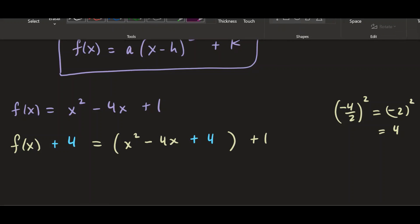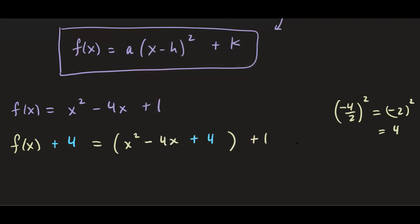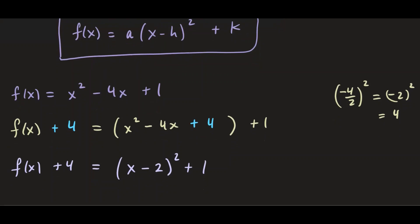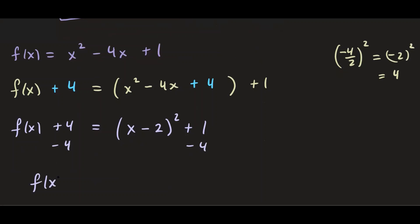Now we are ready to put all of these together. On the left side we have f(x) + 4, and on the right side we have a perfect square: (x - 2)² plus 1. To solve for f(x), we subtract 4 from both sides, giving us f(x) = (x - 2)² - 3. And that's the standard form.